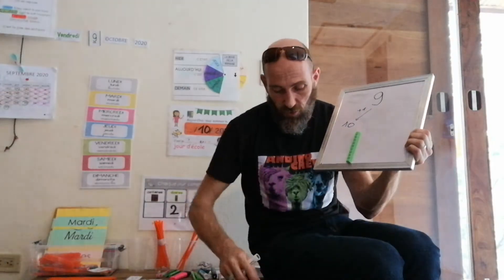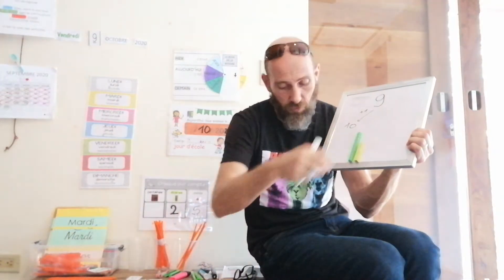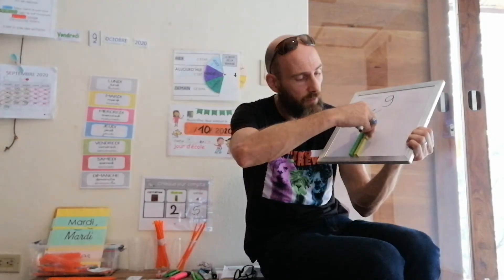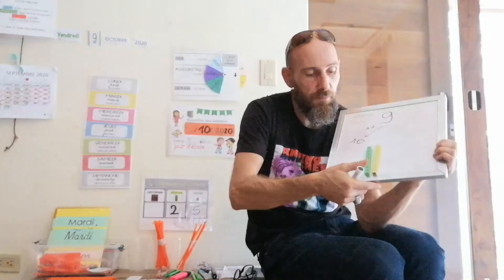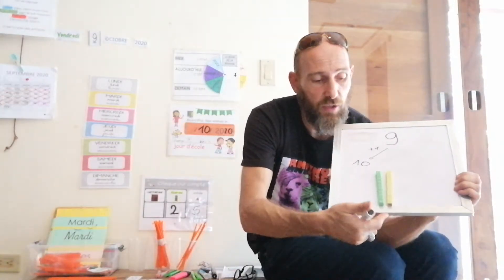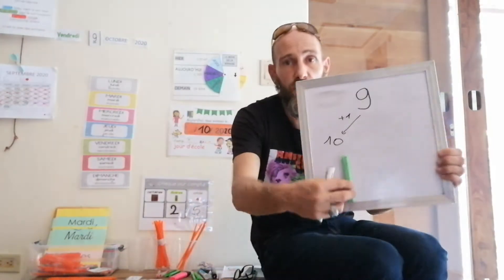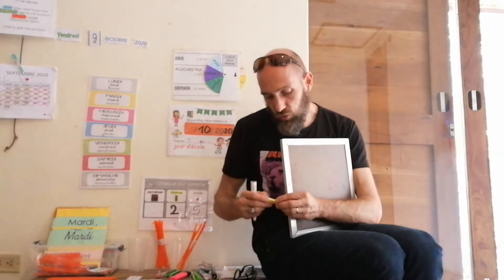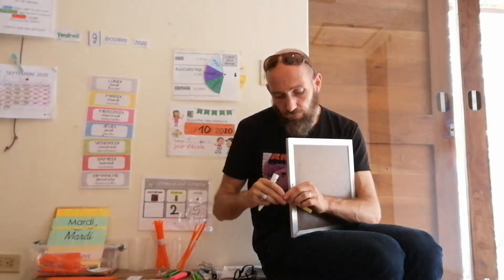C'est la même chose. Si je les mets l'un à côté de l'autre, tu vas voir que 10 petits cubes, voilà, 10 petits cubes, c'est bien la même chose qu'une base de 10 cubes. Et que 10 petits cubes, 10 unités, je pourrais les remplacer par une dizaine. Donc, 9 plus 1 égale 10. Nous sommes le 9.